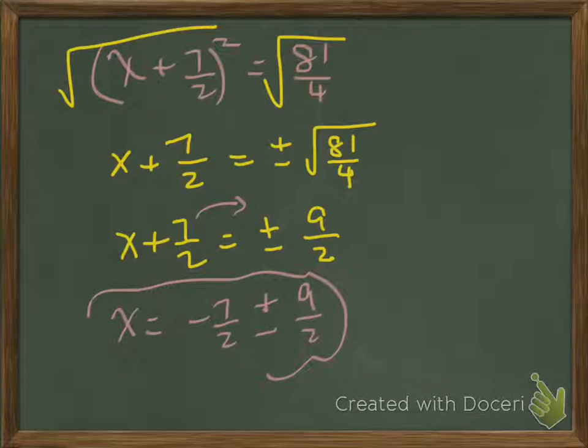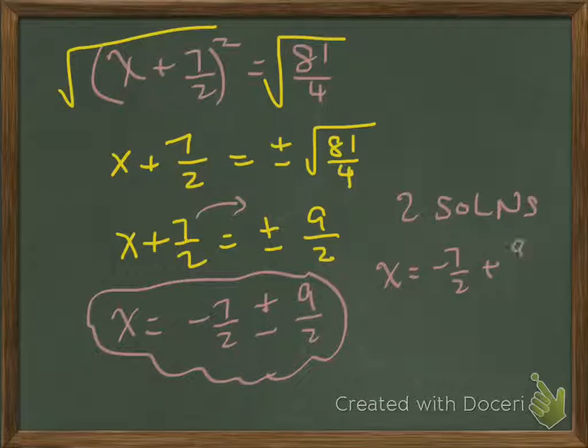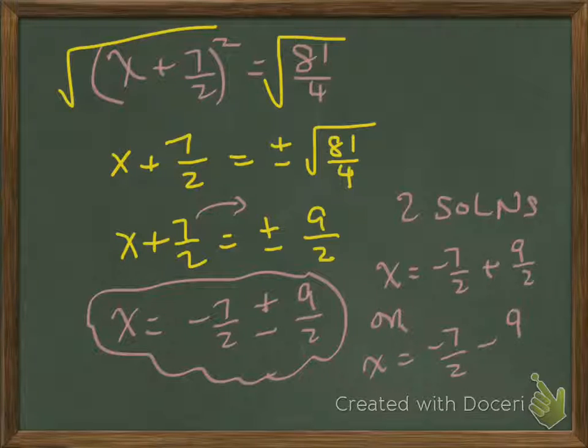This gives us the two roots of that quadratic equation. The two solutions are x equals minus 7 halves plus 9 halves, and the other root is x equals minus 7 halves minus 9 halves. You can work those out yourselves.